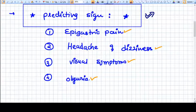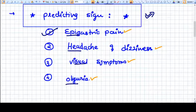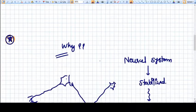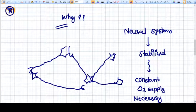These are epigastric pain, headache, visual symptoms, and oliguria. All these signs are there. Now why does eclampsia happen?